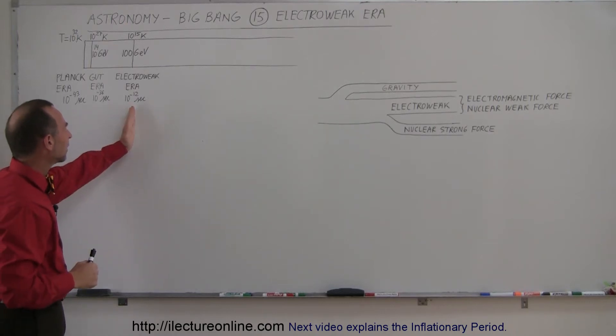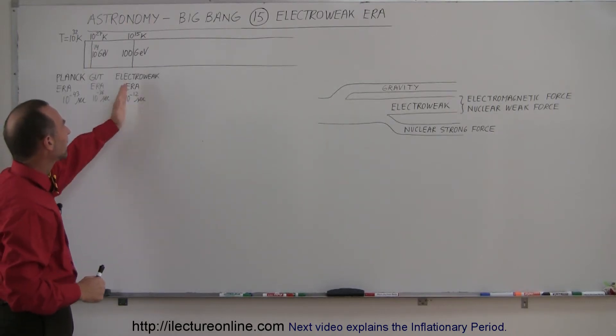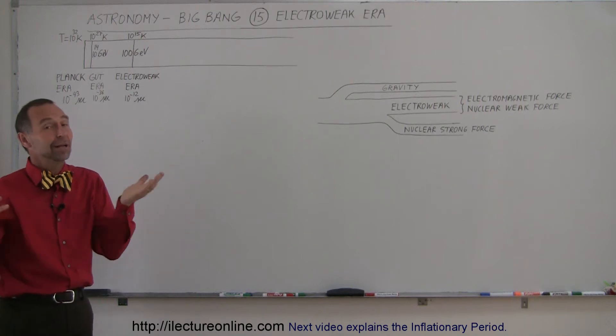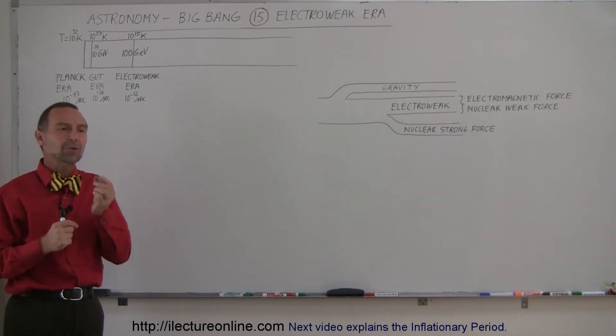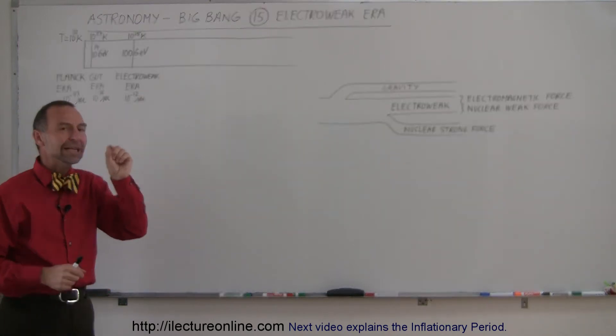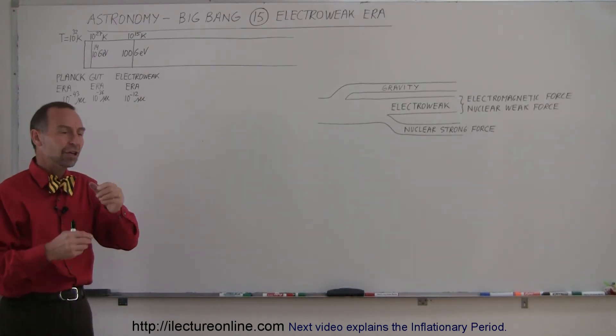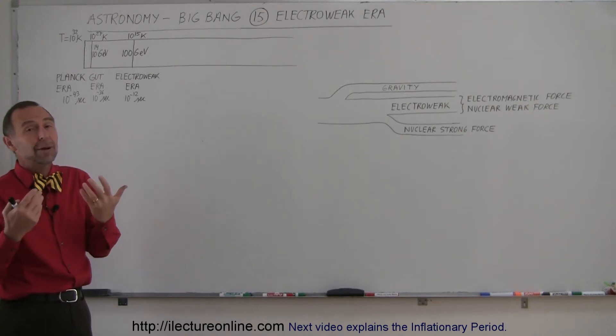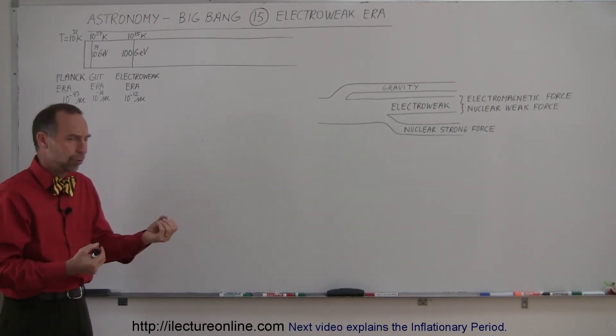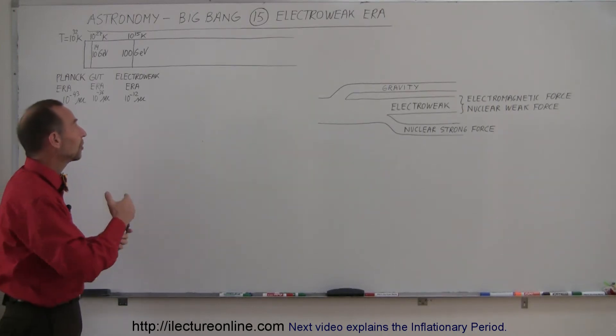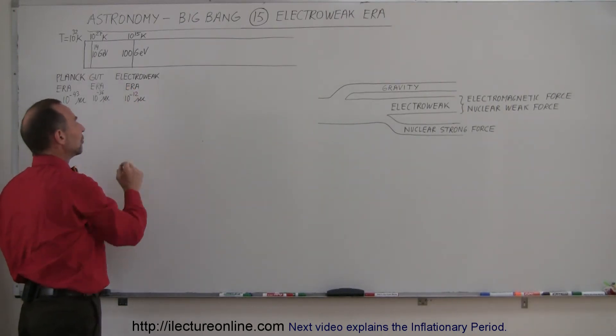So what happened at the end of this electroweak era? We now had energy only of 100, and I say only with a grain of salt of course, 100 giga electron volts, which means at that point there was still plenty of energy within each photon, within each chunk of energy, to create particles. Because you only need about 2 giga electron volts to create a neutron, an anti-neutron, or a proton and an anti-proton. So there was still plenty of energy in the universe.